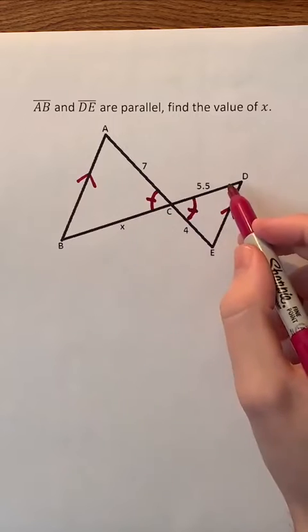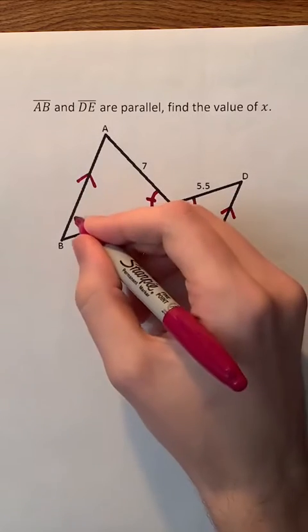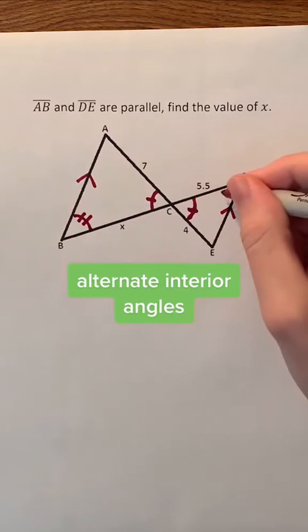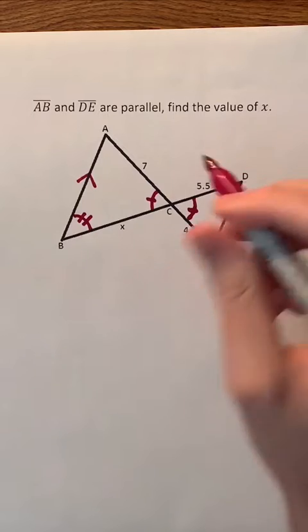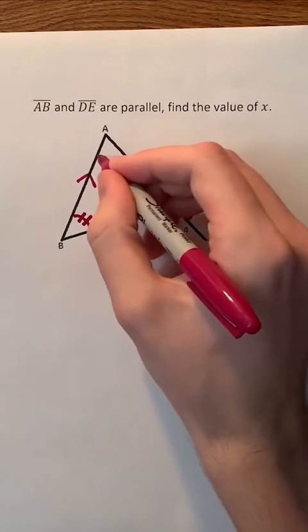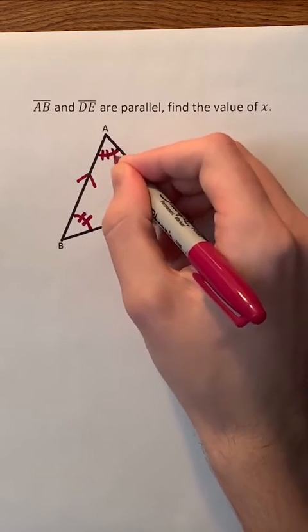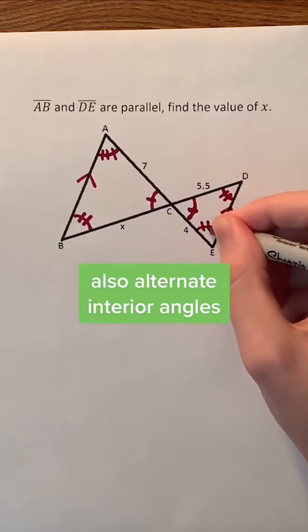Since line segment BD intersects the parallel lines, these two angles must be alternate interior angles so they are congruent. Line segment AE is also dealing with the same situation so these two angles right here must also be alternate interior angles.